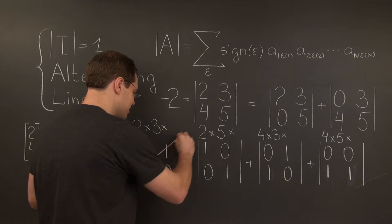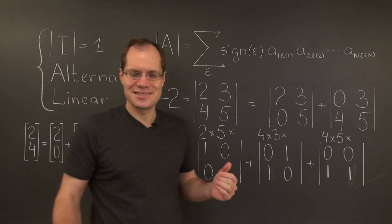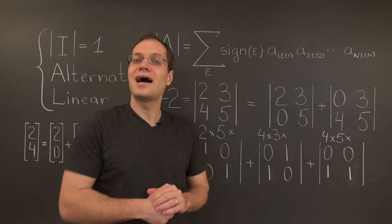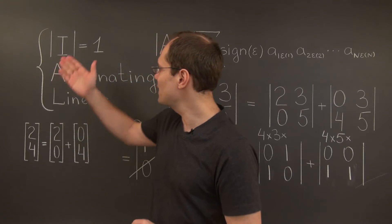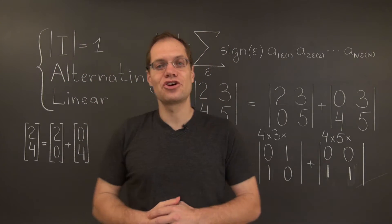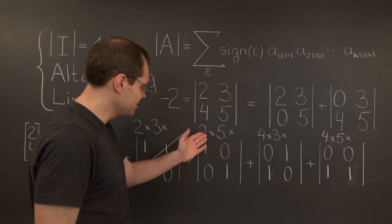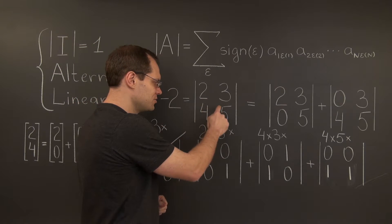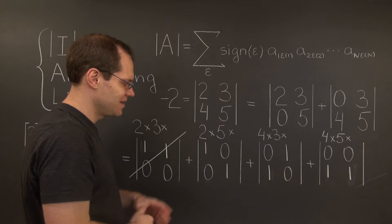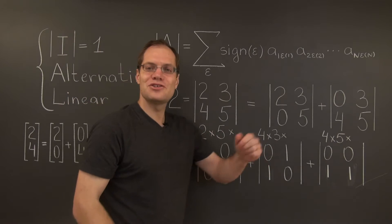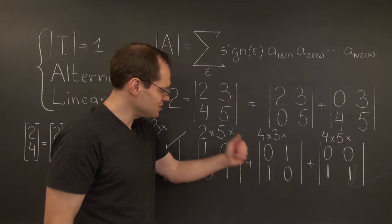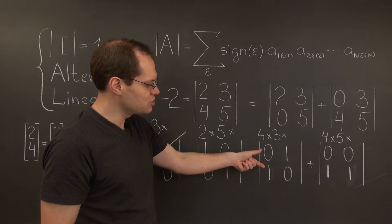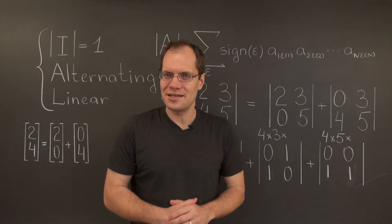So we're going to cross it out. Next is this determinant — this is the 2×2 identity matrix, and by the first property its determinant is one. So this leaves us with two times five. Moving on to the third matrix: this matrix is not the identity matrix, but it's a single row switch away from the identity matrix.